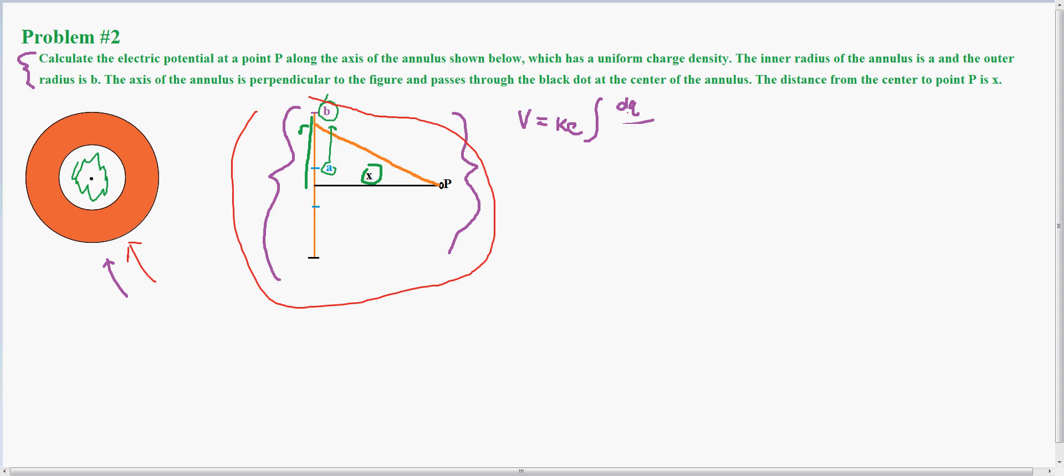The way I set it up was I had V, the potential, equal to Ke, or the integral of DQ divided by big R.